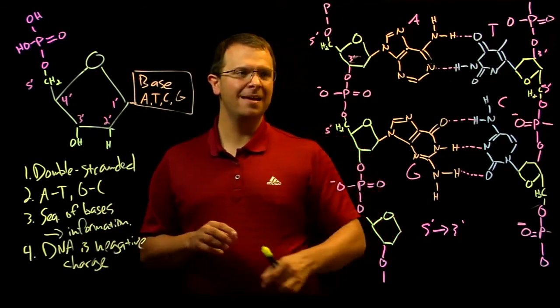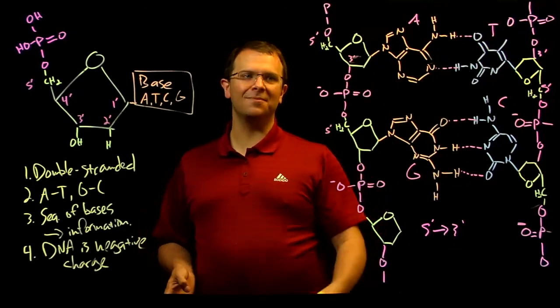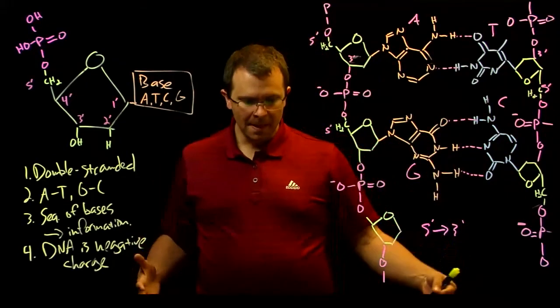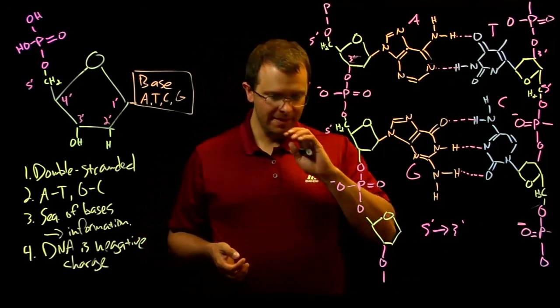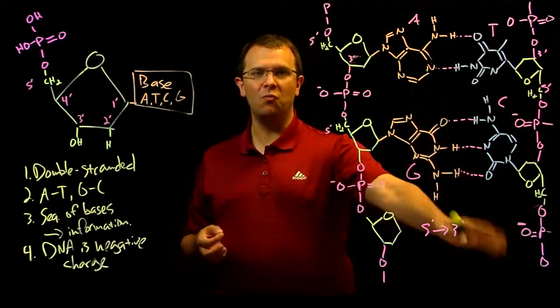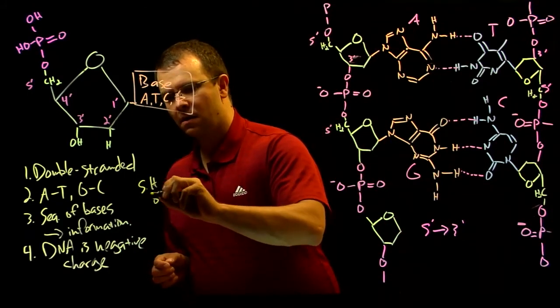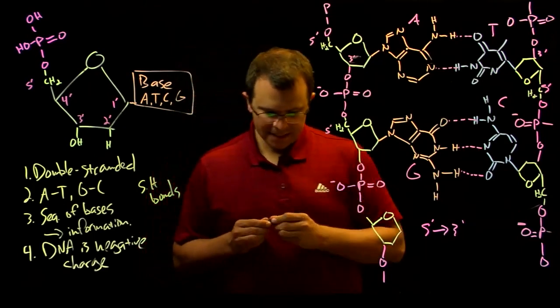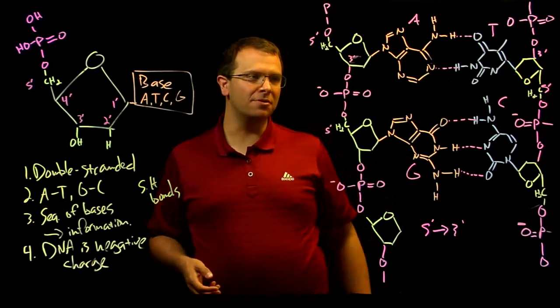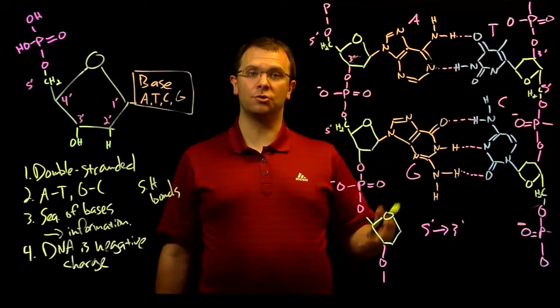Finally, while the backbone is connected with covalent bonds, these phosphodiester bonds, the two strands themselves are only connected with hydrogen bonds. Hydrogen bonds are much weaker than covalent bonds. Which means that it doesn't take much energy, much heat in particular, to melt these two strands apart and end up with single-stranded DNA.